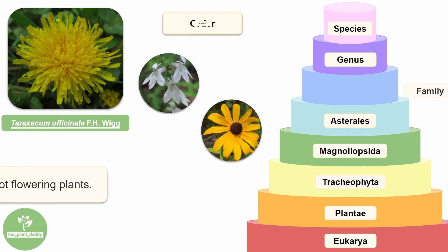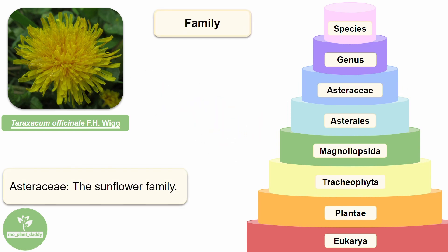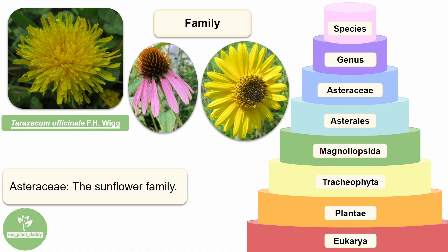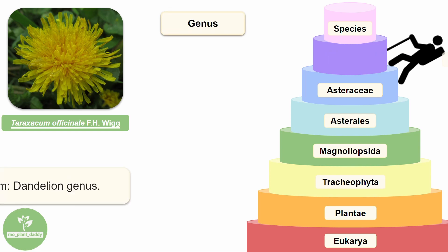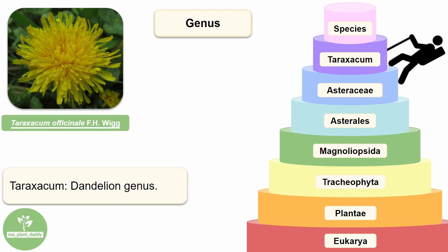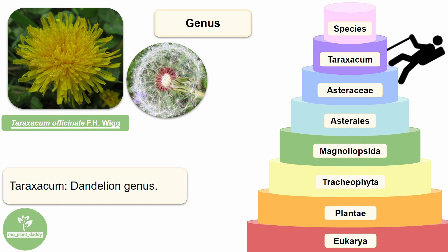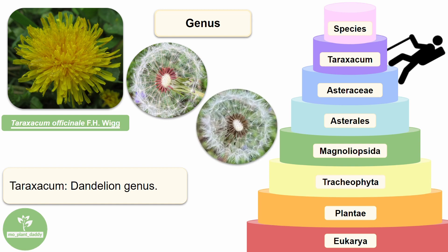As far as families go, dandelions belong to Asteraceae, known as the sunflower or daisy family. It contains plants like coneflowers and the ashy sunflower. We're almost to the finish line — we've just got genus and the species level left. The common dandelion belongs to the genus Taraxacum, which consists of all dandelions. Two common dandelions in this genus are the red-seeded dandelion and the common dandelion. To officially distinguish between these two very similar species, we filter by specific epithet, therefore going to the species level.